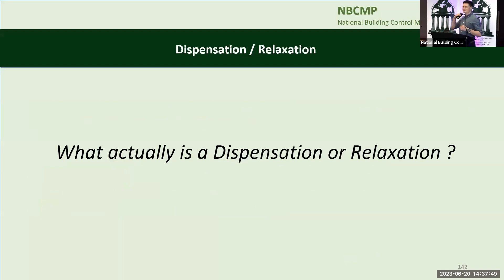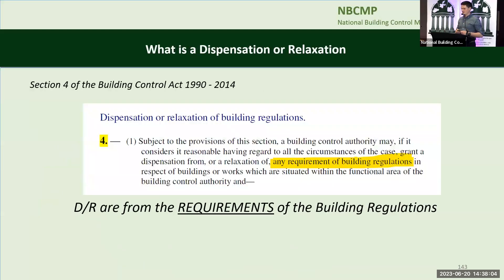When we talk about dispensing a regulation or relaxing a requirement — when we're talking about dispensations or relaxations, what are we actually talking about? Section 4 of the Building Control Act is the first primary piece of legislation where dispensations and relaxations crop up. It tells you that a building control authority may, if it considers it reasonable having regard to all the circumstances of the case, grant a dispensation from or a relaxation of any requirement of the building regulations. So dispensations or relaxations are from the requirements of the building regulations.